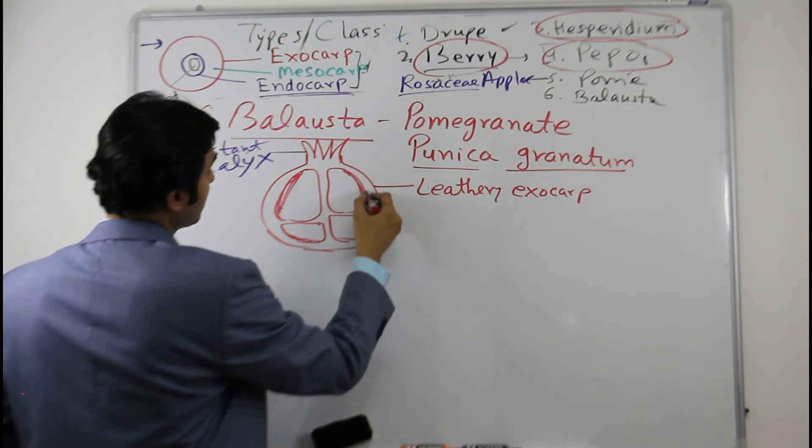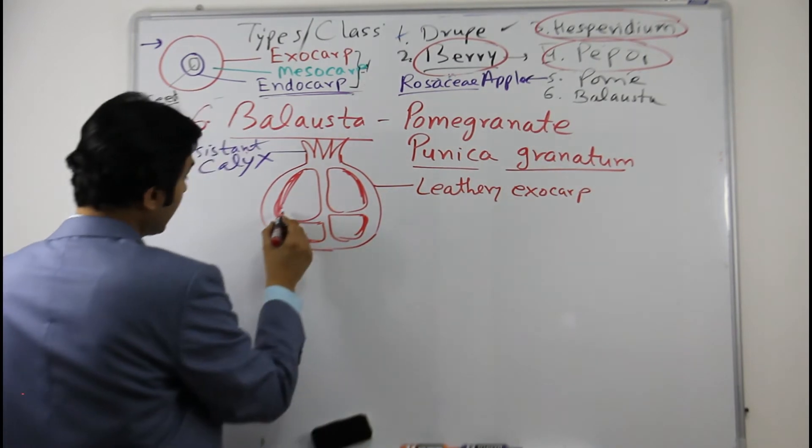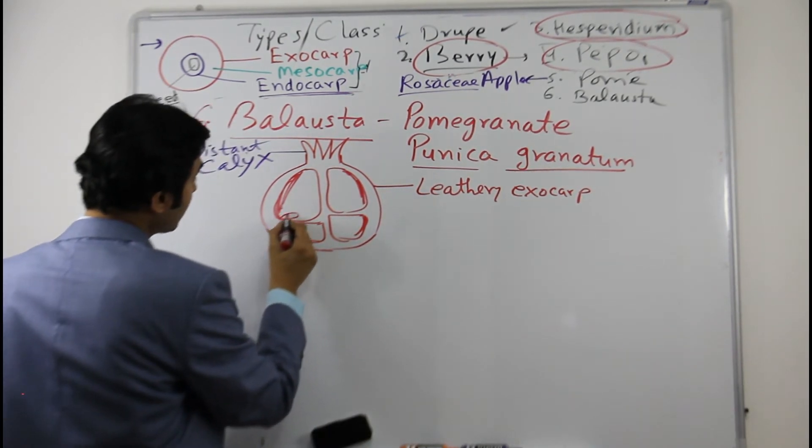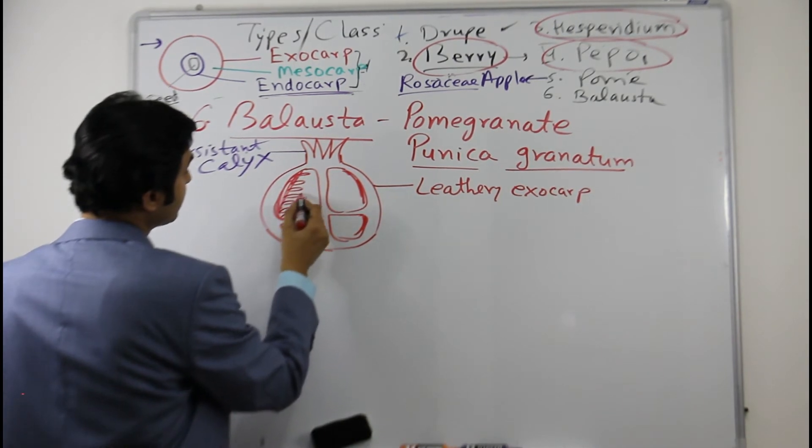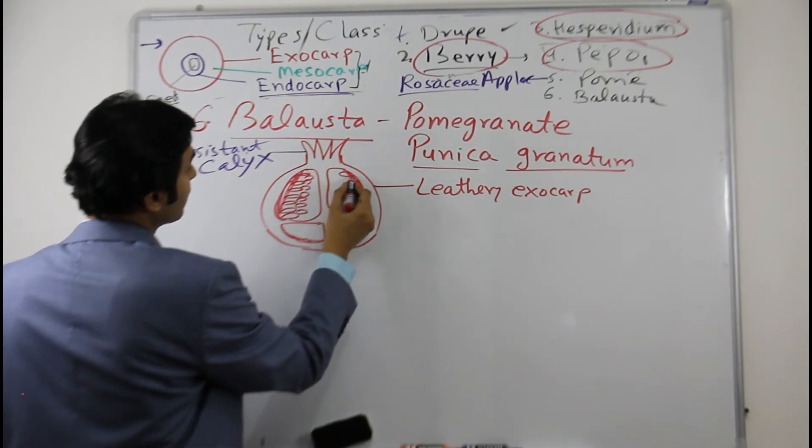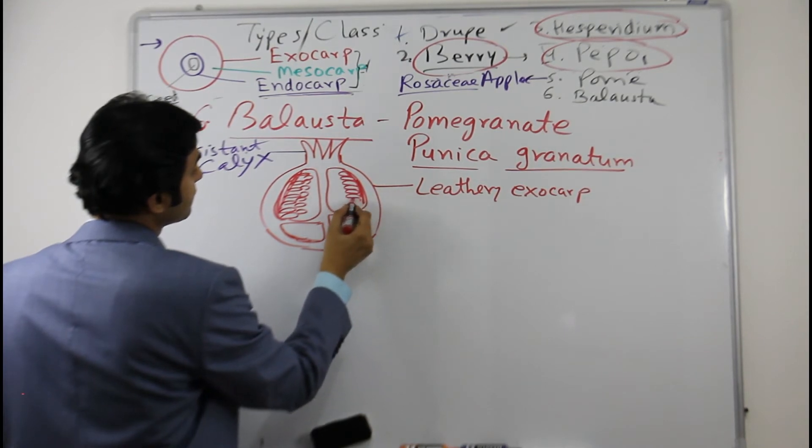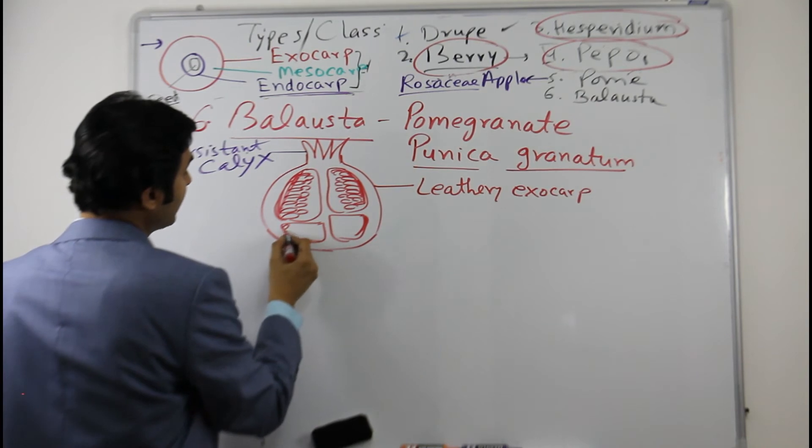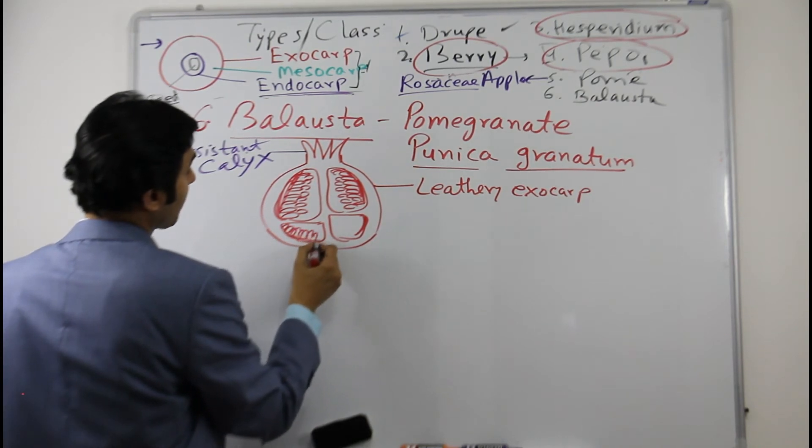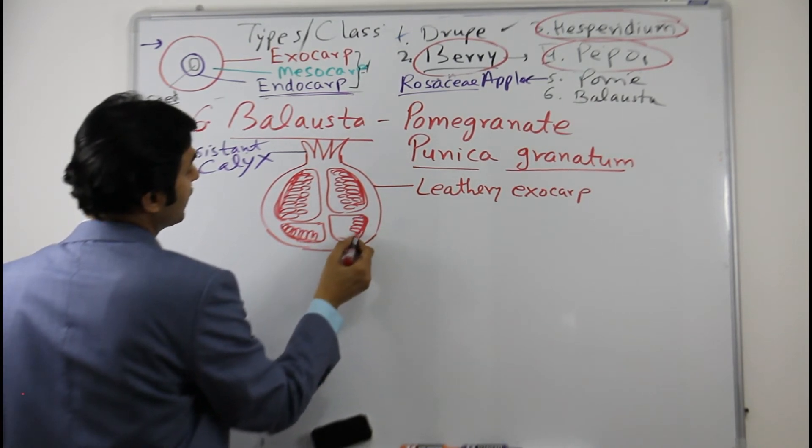And there's a placenta tissue, and here inside what happens there are seeds arranged in layers like this. It is filled with seeds, but these seeds have something unique about them.